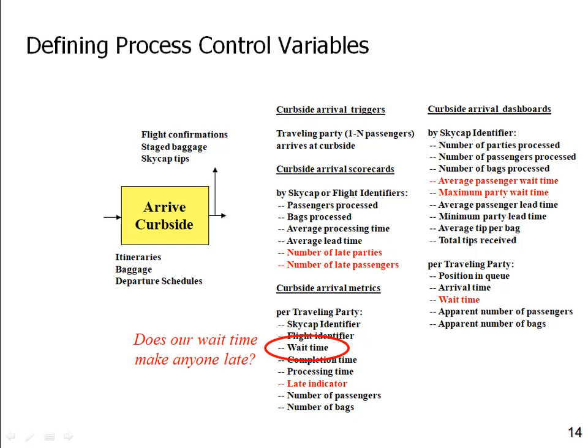I should also look at these controls to see what failure modes my process could introduce. I have a wait time metric: some parties and passengers are going to wait in line. How often does that wait time cause them to be late? Suppose it's 70 minutes until their flight and they get in line, but it takes 20 minutes before I get to them — now it's only 50 minutes before the flight and I flag them as late. That's my fault because my process isn't working efficiently enough. As my average wait time goes up, my control process should perhaps put more skycaps on to keep wait time low — so my process isn't causing the very problem it's supposed to help avoid.